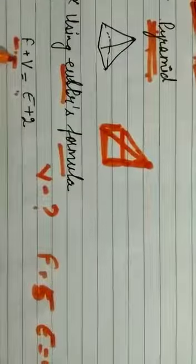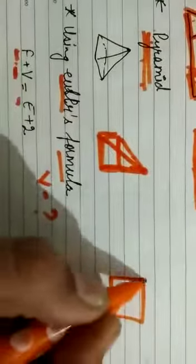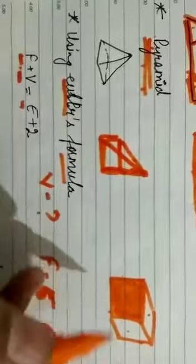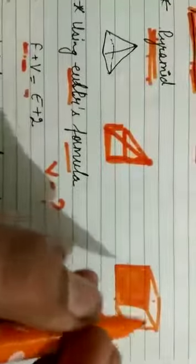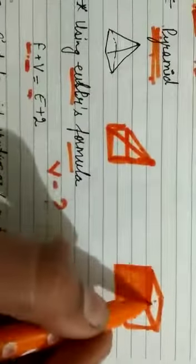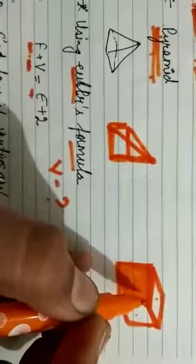Let me remind you what faces, edges, and vertices are. I have made a figure here — a cube. Faces are the polygonal regions: front, back, top, bottom, and sides. Edges are the line segments you can see in this diagram. Vertices are the points where these line segments meet.